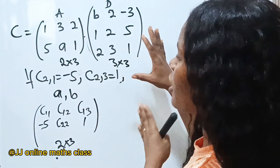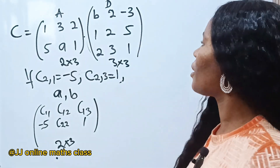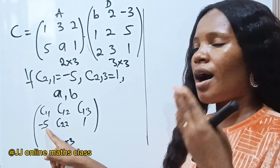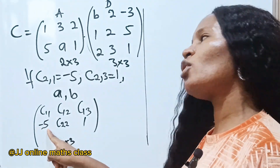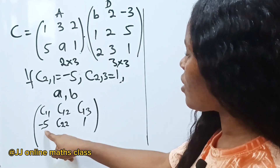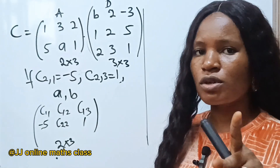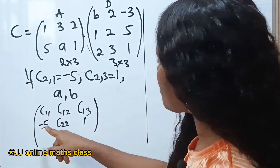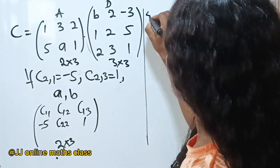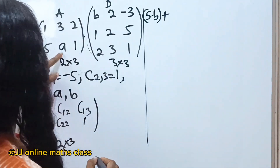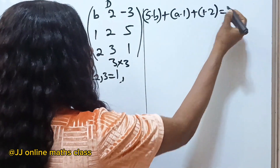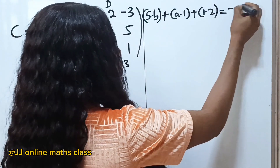Now let's form equations. We know c21 is minus five. To get c21, we multiply the second row of A by the first column of B. So: five times b, plus a times one, plus one times two equals minus five. That gives us 5b + a + 2 = -5.